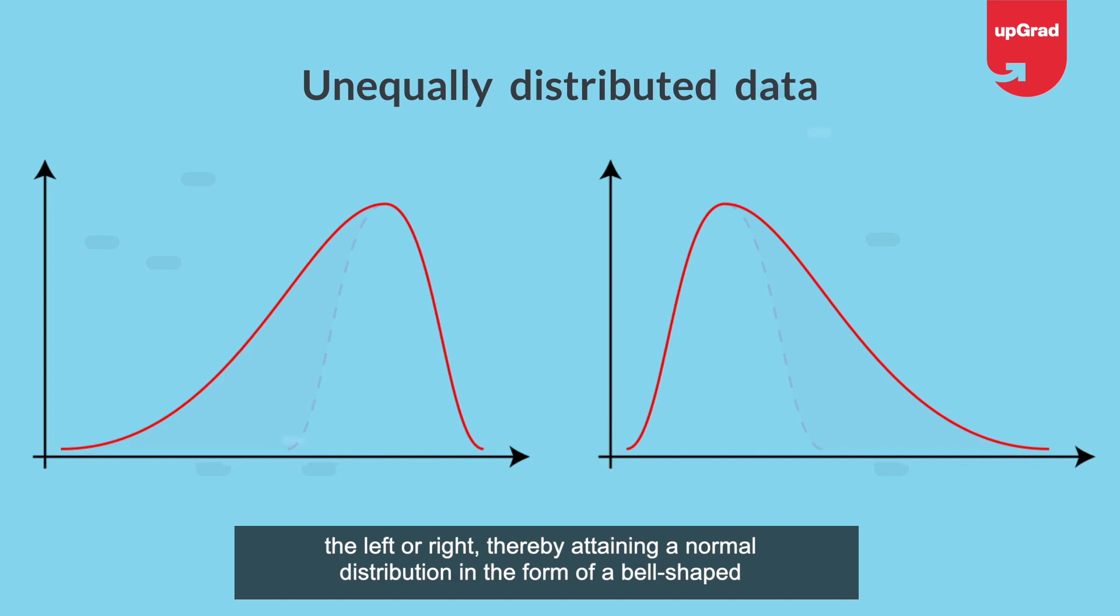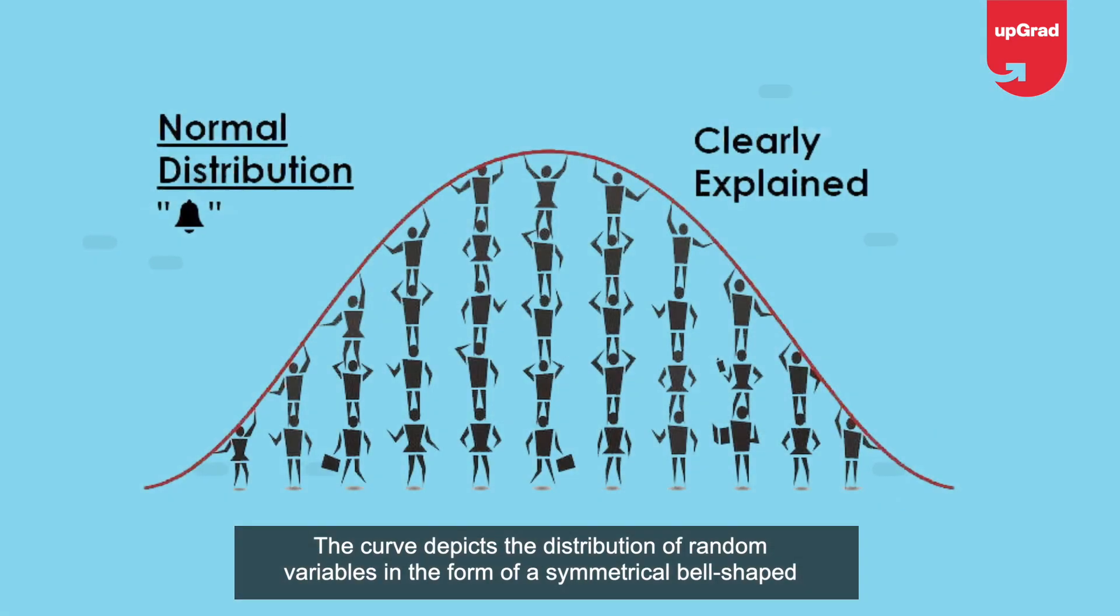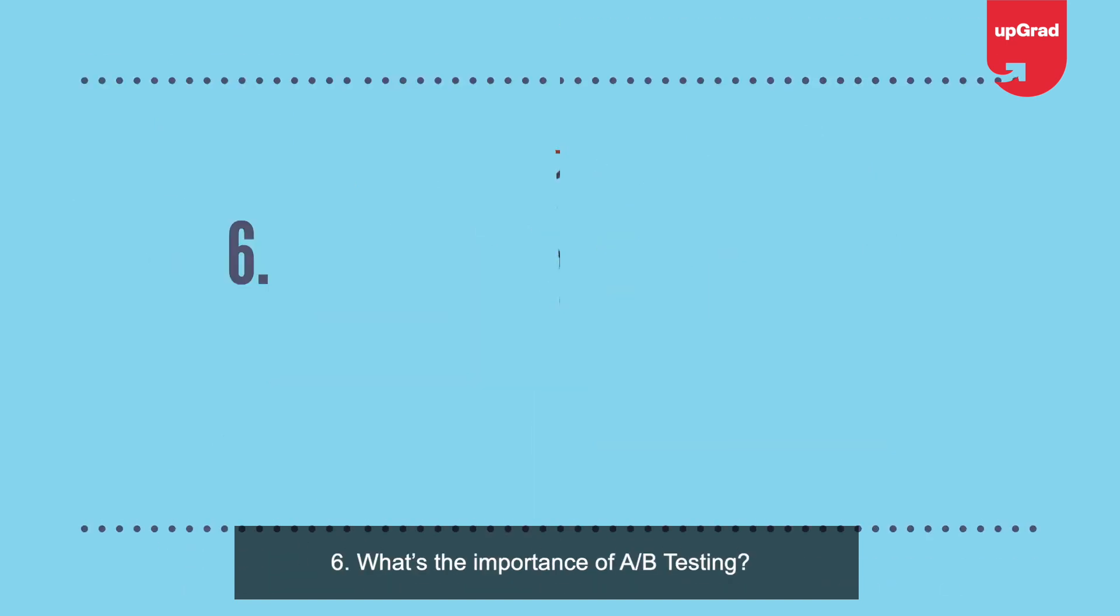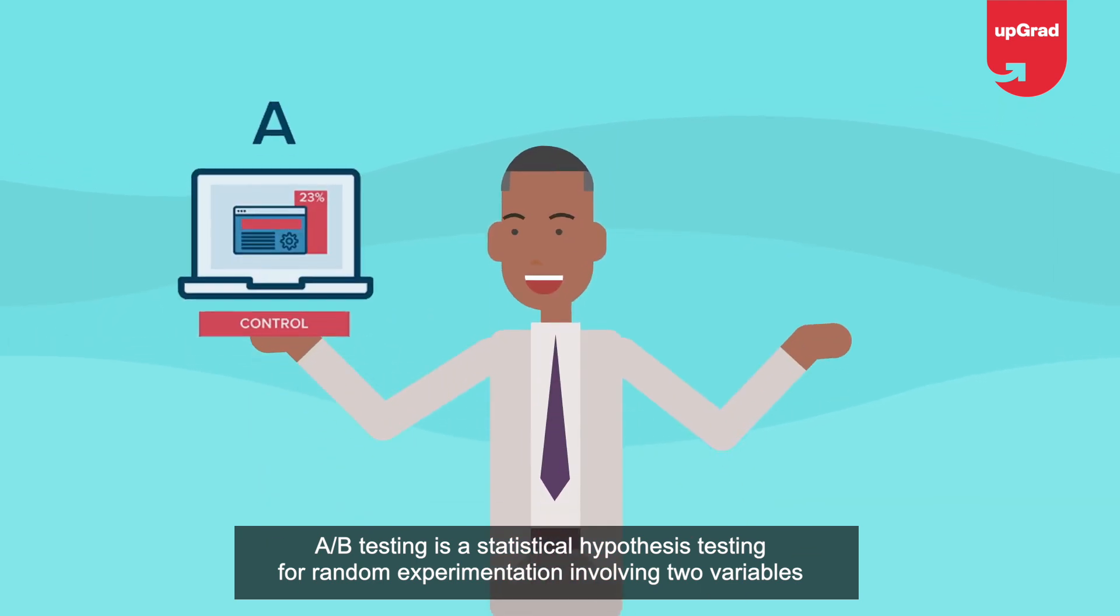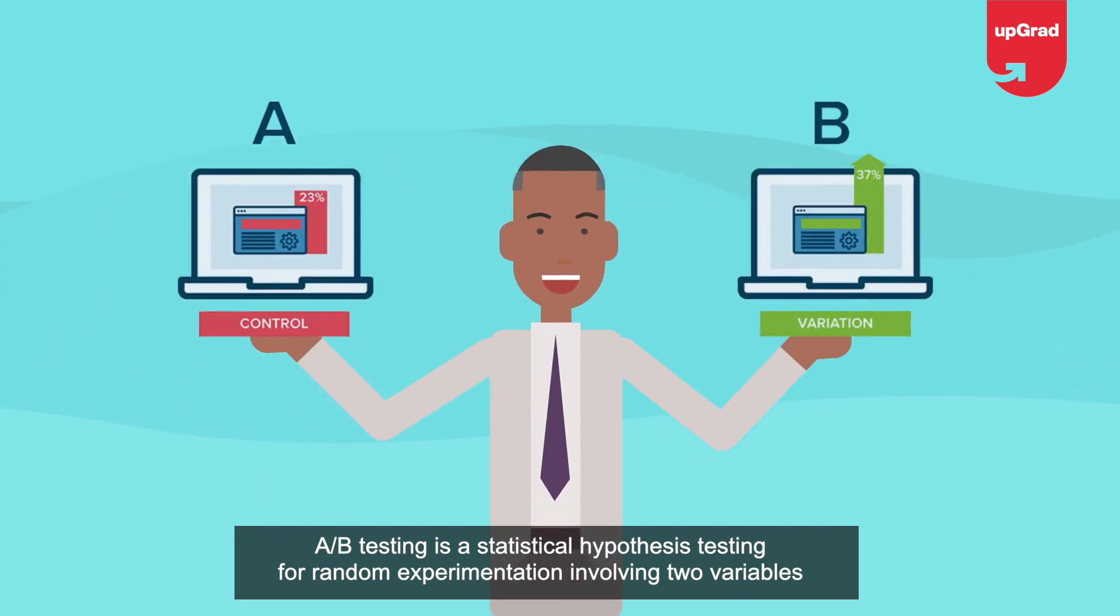Question 5: What is normal distribution? There are instances where data is distributed around a central value without any bias to the left or right, thereby attaining a normal distribution in the form of a bell-shaped curve. The curve depicts the distribution of random variables in the form of a symmetrical bell-shaped curve.